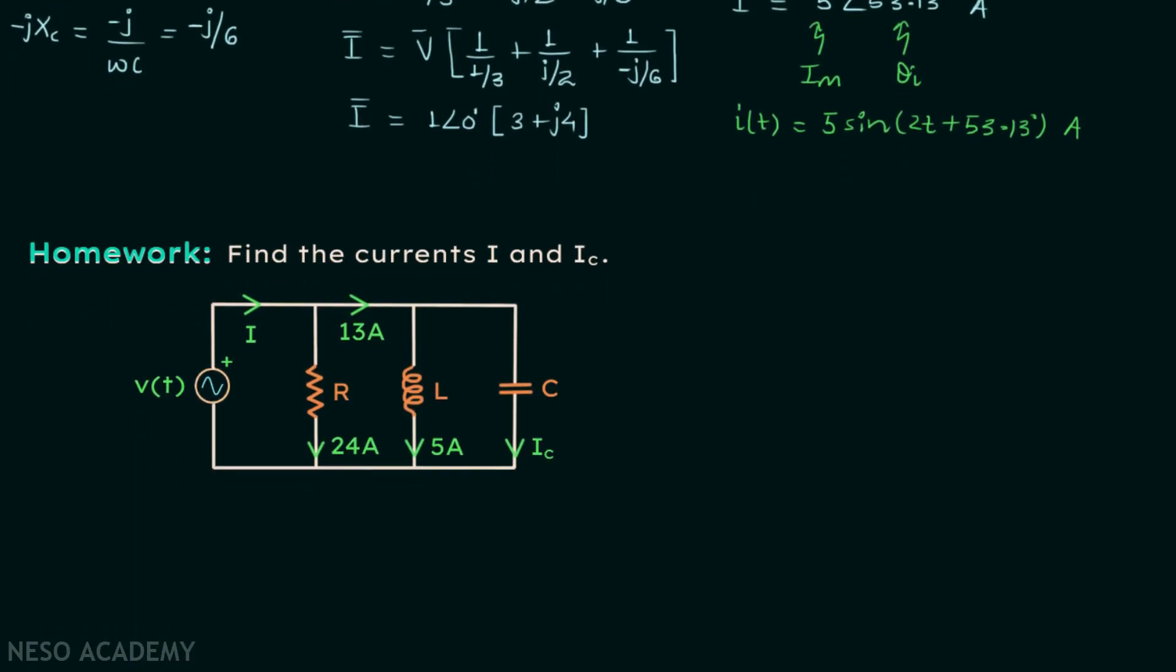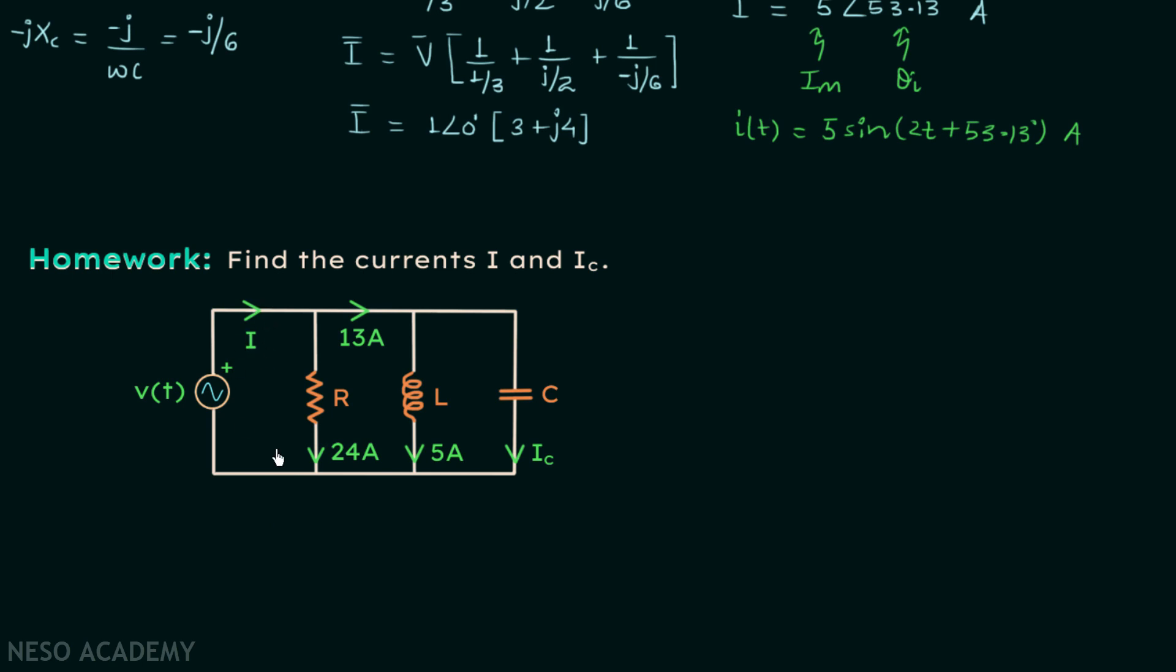In this homework problem you are required to find current I and current IC. Once you have your answer post it in the comment section. And you will find the link to the solution of this question in the description and in the comment section.